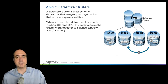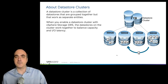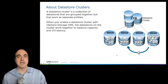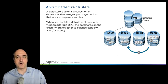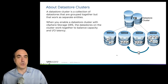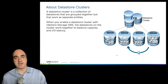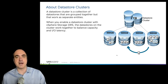Essentially, if you take a group of data stores and have them work as a logical unit — this isn't RAID, it's not even RAIN (redundant array of independent nodes) — it's basically an aggregate of data stores. In our example, we have four data stores at 500 gigabytes each, making the entire data store cluster two terabytes of storage. They're not required to be all the same size, and we're not striping across them.